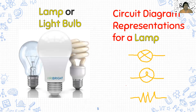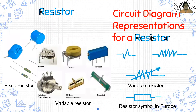How about for a lamp or a light bulb? You could represent it like this — it looks like an X inside a circle, more like the filament. It's a nice circle. And then, since your light bulb is just another resistor, you could also represent it like this. This is a symbol for your resistor.